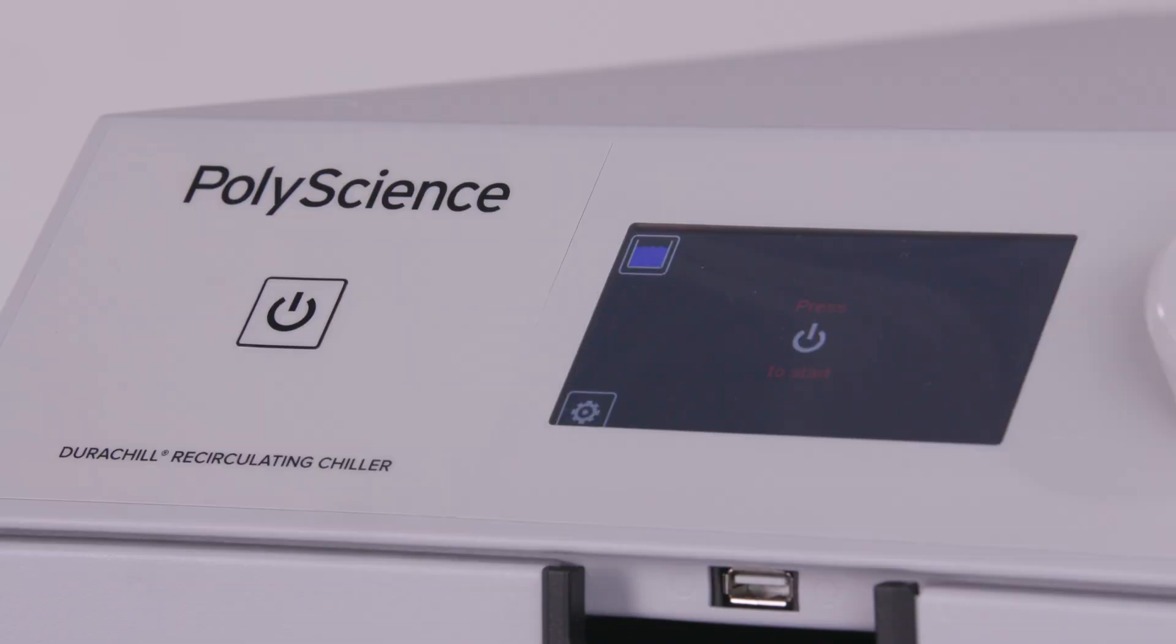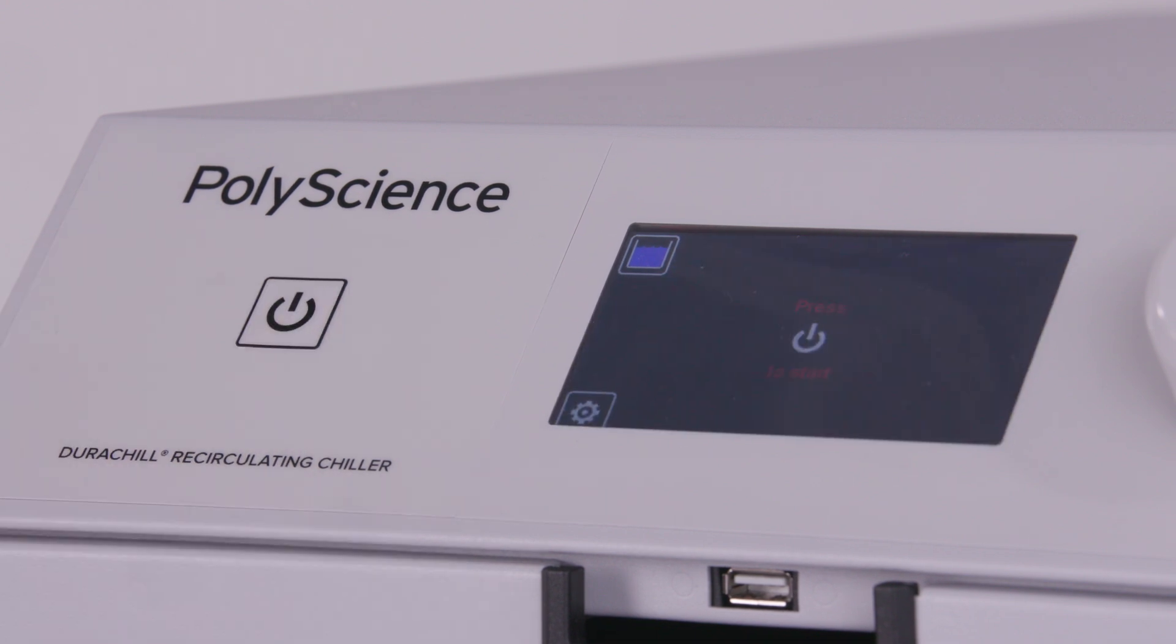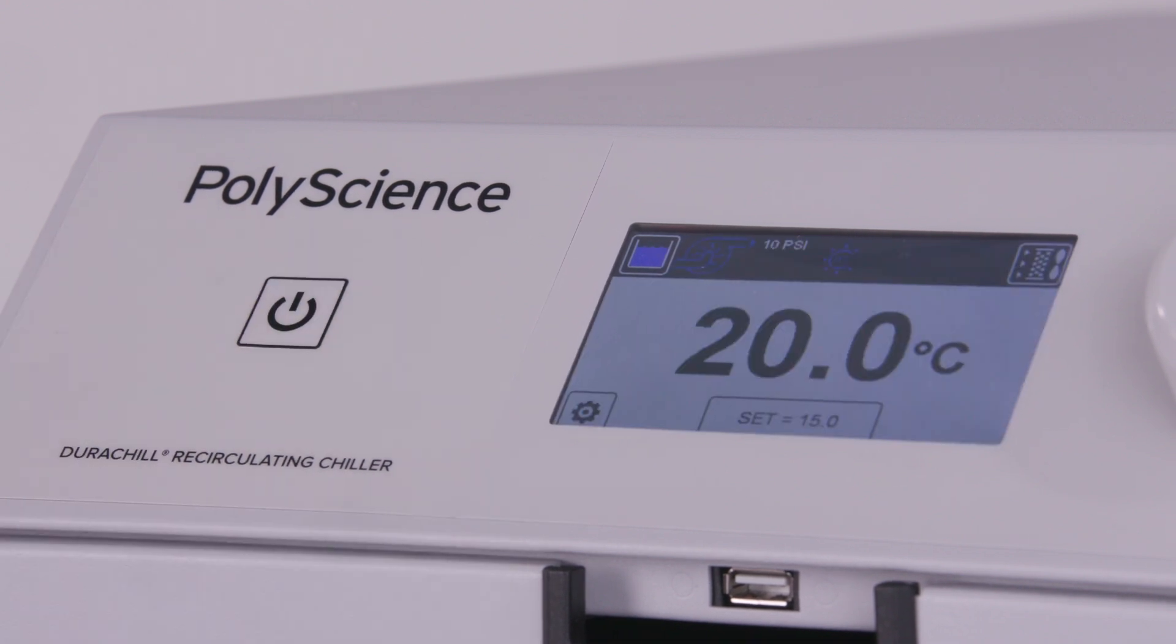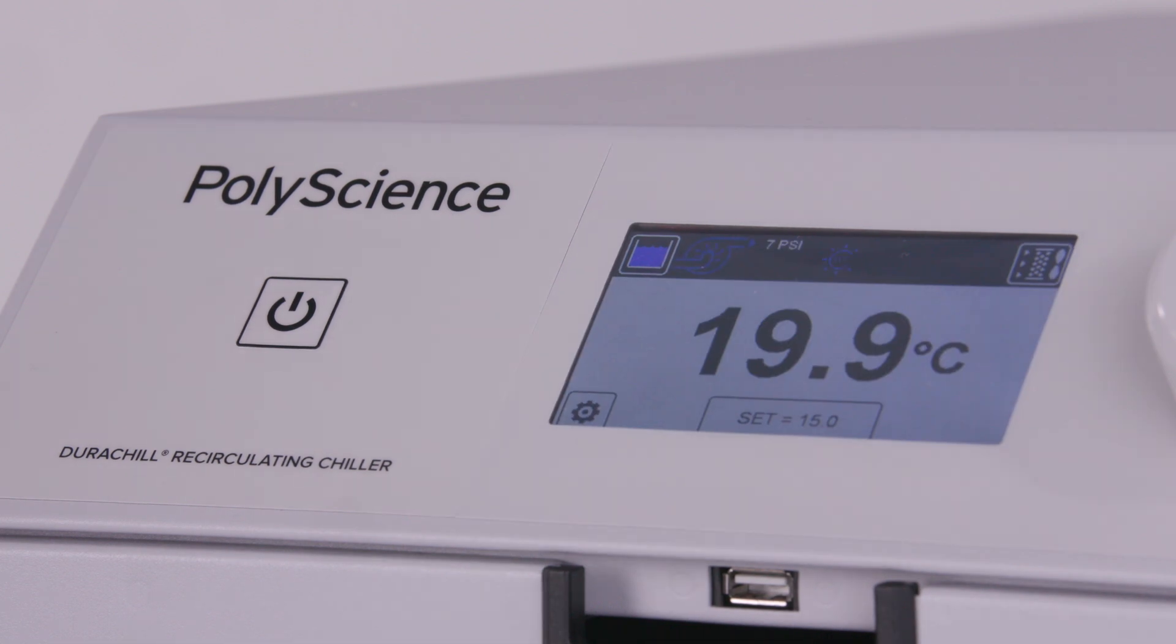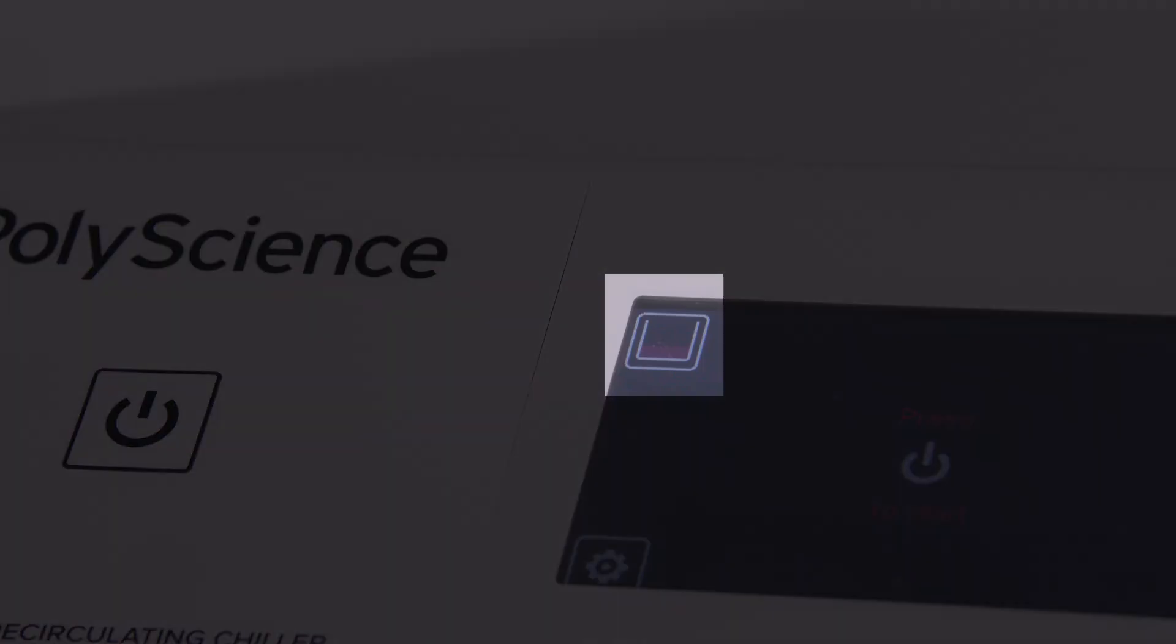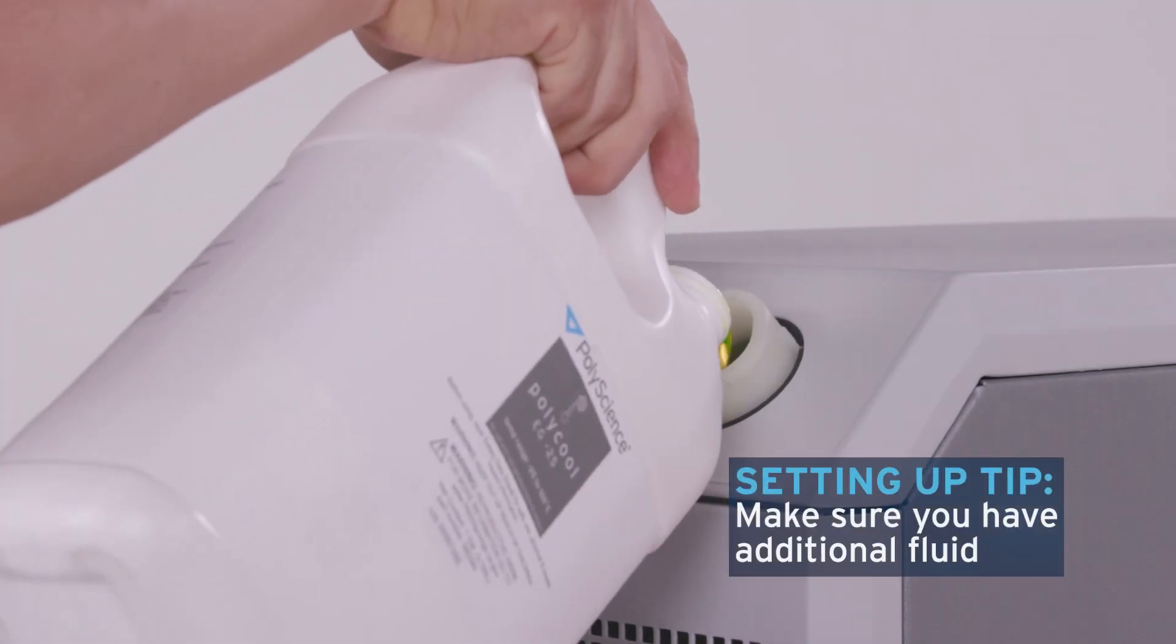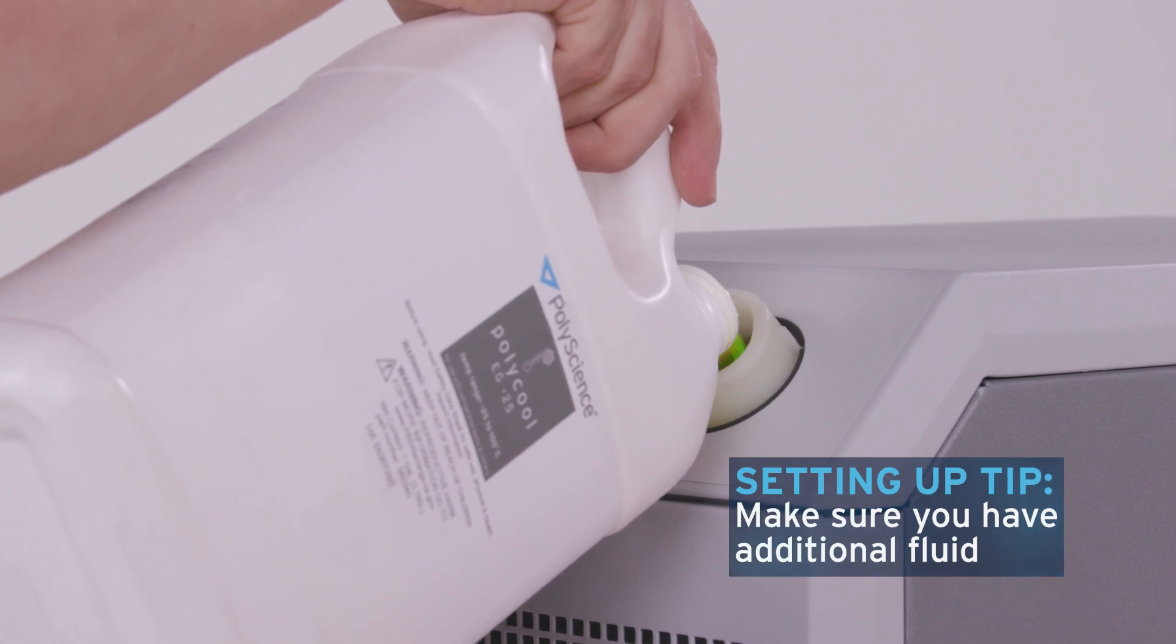Prime the pump by turning the unit on then off three times. This purges the air from inside the pump. As the process tubing fills with liquid, the liquid level in the chiller's reservoir may drop. This is normal and may occur more than once. Refill the chiller's reservoir as needed.